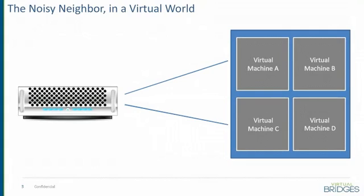In a virtual world we can look at the box on the left, and that might be a server that you have deployed in your data center. On the right, the blue box represents the physical assets that this server has — this would be the hard drive, the RAM, the CPU, and the network capacity. Now on top of those resources, virtual machines are deployed. In this case I'm showing four different virtual machines.